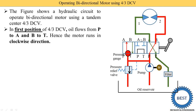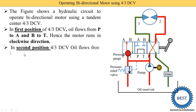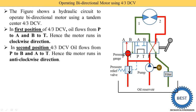Here you see the position of the directional control valve is changed. The directional control valve can be operated by a number of methods — manual, foot valve, solenoid type, or pilot type. Moving the directional control valve to the second position: port P is connected with port B, and port A is connected with port T. In the second position of the 4x3 DCV, oil flows from P to B and A to T, hence the motor runs in the anti-clockwise direction.